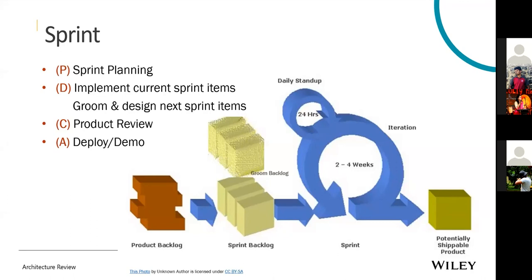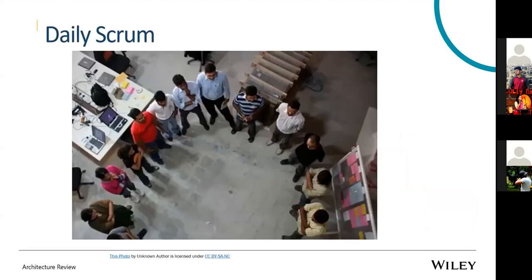An important scrum ceremony is the daily standup — a 15-minute timebox activity where each team member shares three things: what they did yesterday, what they're going to do today, and whether they have any blockers. In my daily standup I would say 'yesterday I did this, today I'm going to do this, and I'm not blocked.' During the daily standup we don't talk about solutions or discuss problems in detail. Before COVID-19 we had standup meetings face-to-face; after COVID-19 we do them remotely.